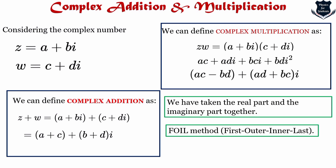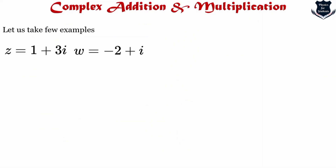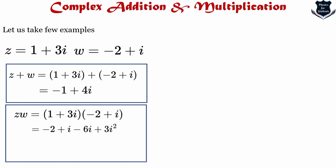Now that these concepts are clearly laid out as definitions, let us see a few examples. Take z = 1 + 3i and w = −2 + i. When we do the addition and the multiplication, the multiplication leads to −1 + 4i. This is how we add and multiply complex numbers.